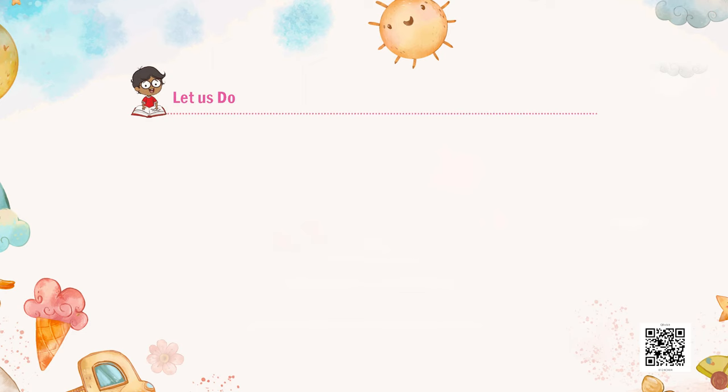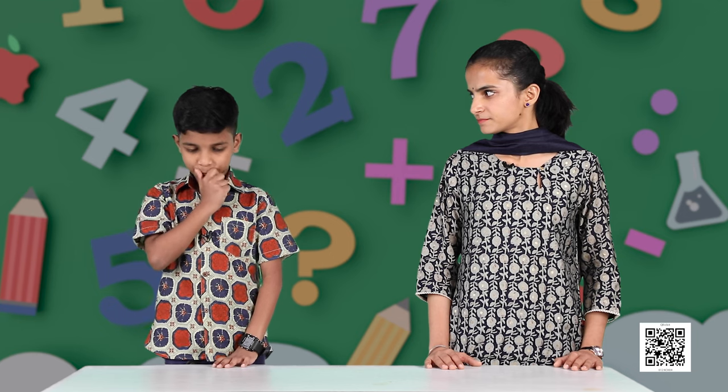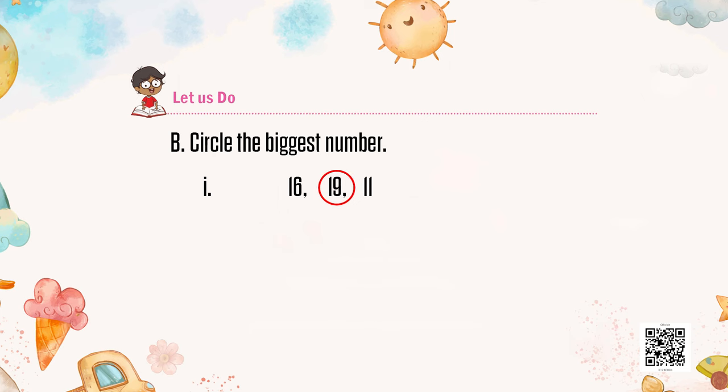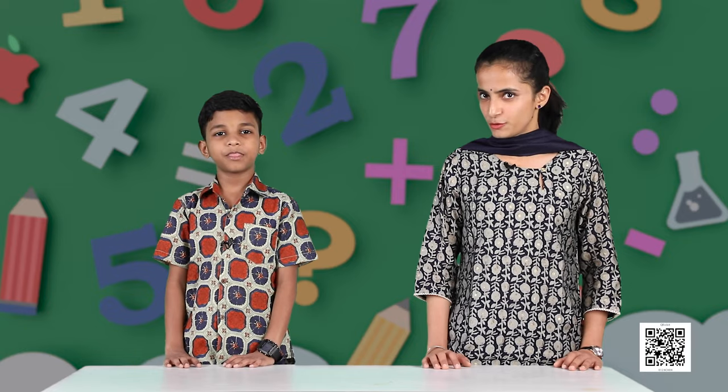Now we have to do the opposite — we have to encircle the biggest number. The first group is 16, 19, 11. Which is the biggest number? 19. Yes, of course. 19 is the biggest number because it comes later in the counting. The second group — 11, 17, and 9 — is to be done by our viewers: find the biggest number and encircle it.